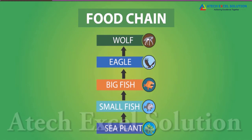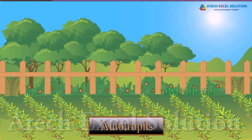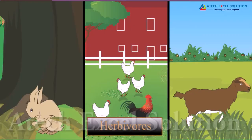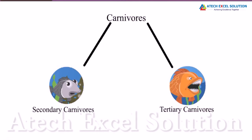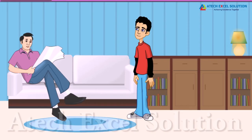Those who make food by using solar energy are called autotrophs. Those who eat autotrophs are called herbivores. Those who eat herbivores are called carnivores, and carnivores can be further divided into small and big carnivores — in other words, secondary and tertiary carnivores.